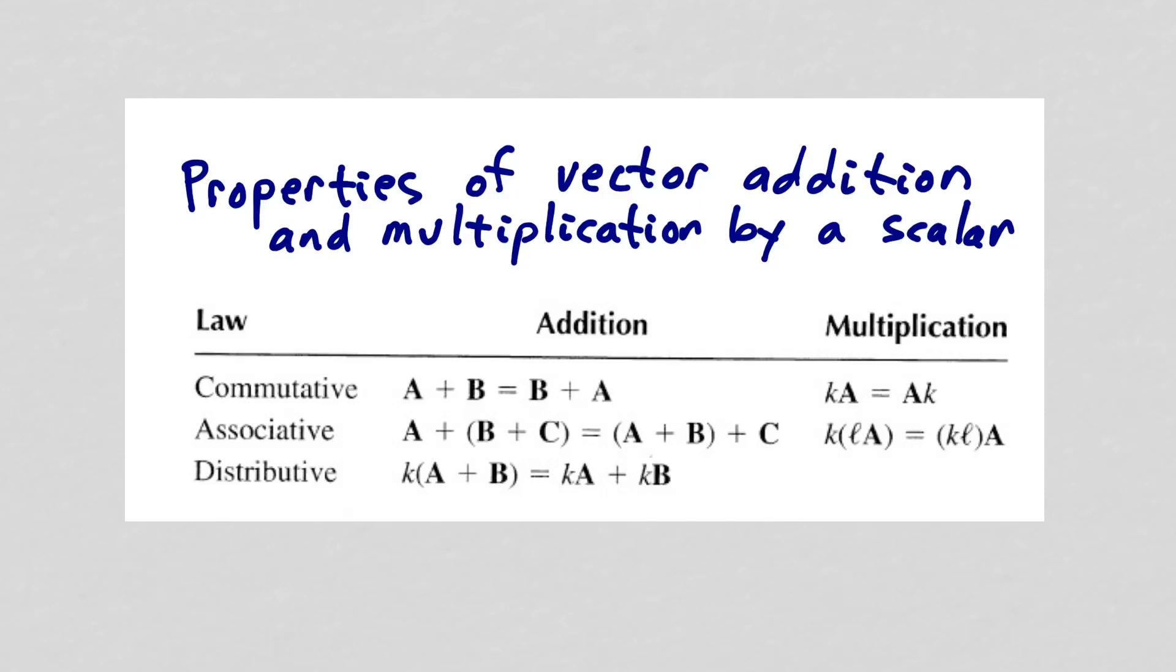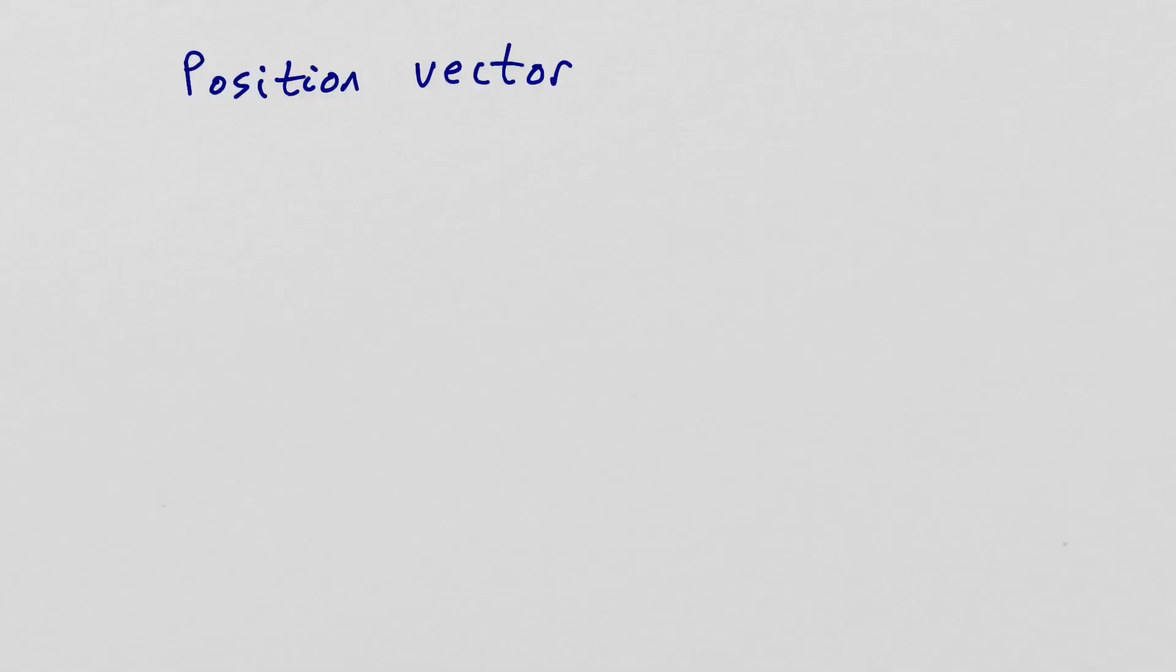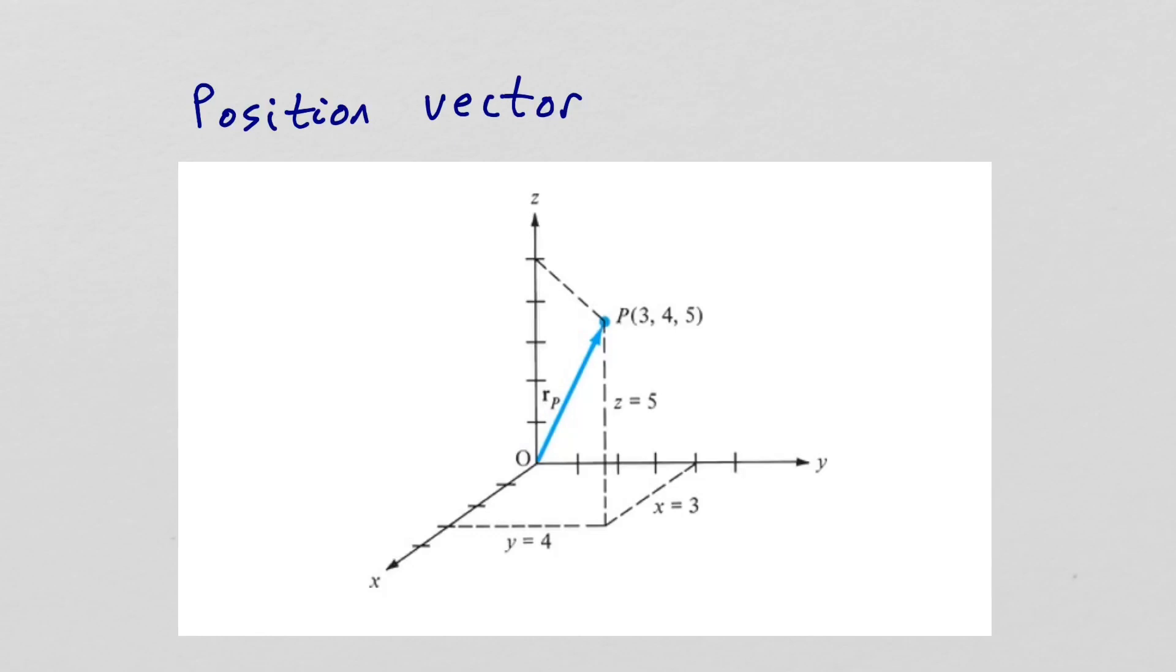Let's now define what we mean by a position vector of a point in space. The magnitude of the position vector will be the distance from the origin to that point in space. And the direction will be the direction pointing from the origin to that point. So for the point 3, 4, 5, the position vector will be 3 in the x direction plus 4 in the y direction plus 5 in the z direction.